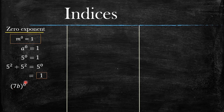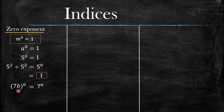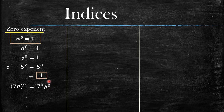What is zero multiplied by the exponent of seven, which is one? Zero times one equals zero, so we'll have seven raised to the power zero. What about b? Zero multiplied by one, which is the exponent for b, will also be zero, so we'll have b raised to the power zero. From here we can apply the zero exponent law.